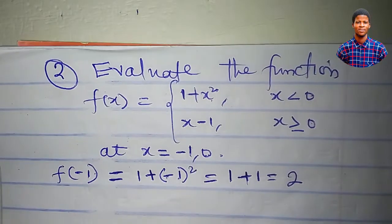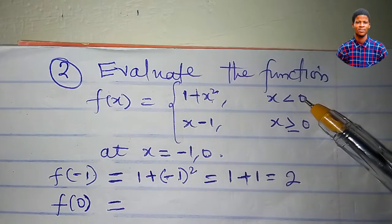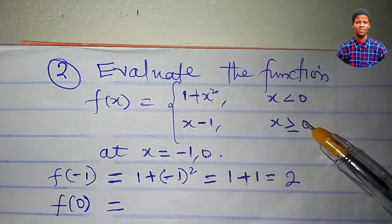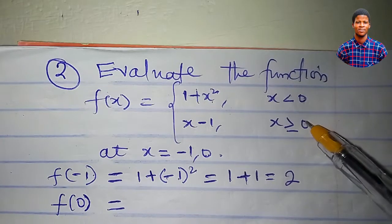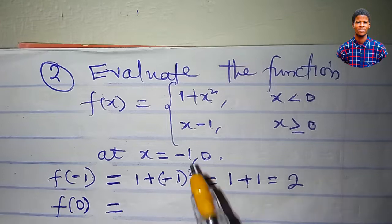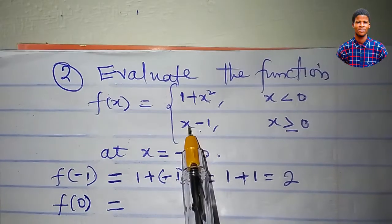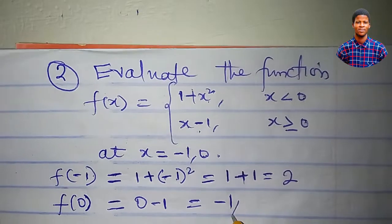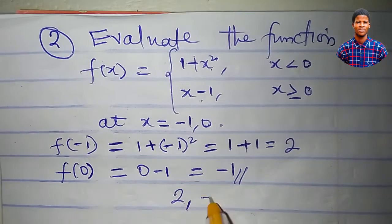What then is f(0)? Here x is less than 0, and numbers less than 0 are from minus 1 down — 0 is not included. But the other interval says x greater than or equal to 0, so the equal to 0 means 0 is part of that interval. So I use the sub-function x minus 1. At x equal to 0, I have 0 minus 1, which equals minus 1. So at x equal to minus 1 the function equals 2, and at x equal to 0 it equals minus 1.